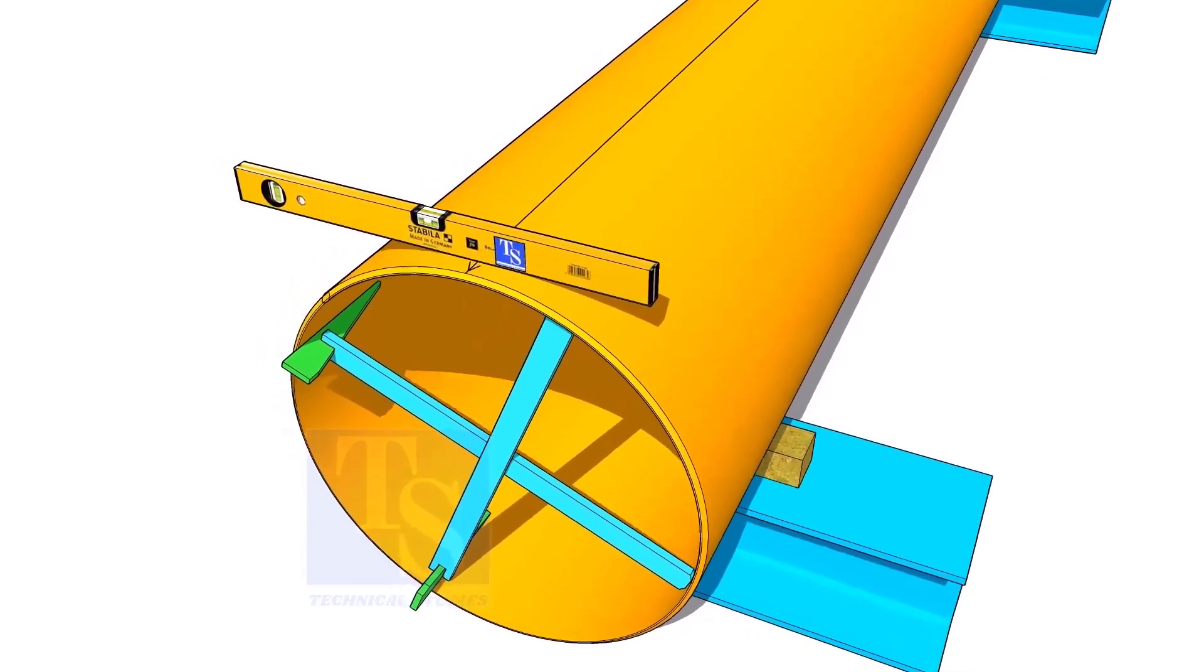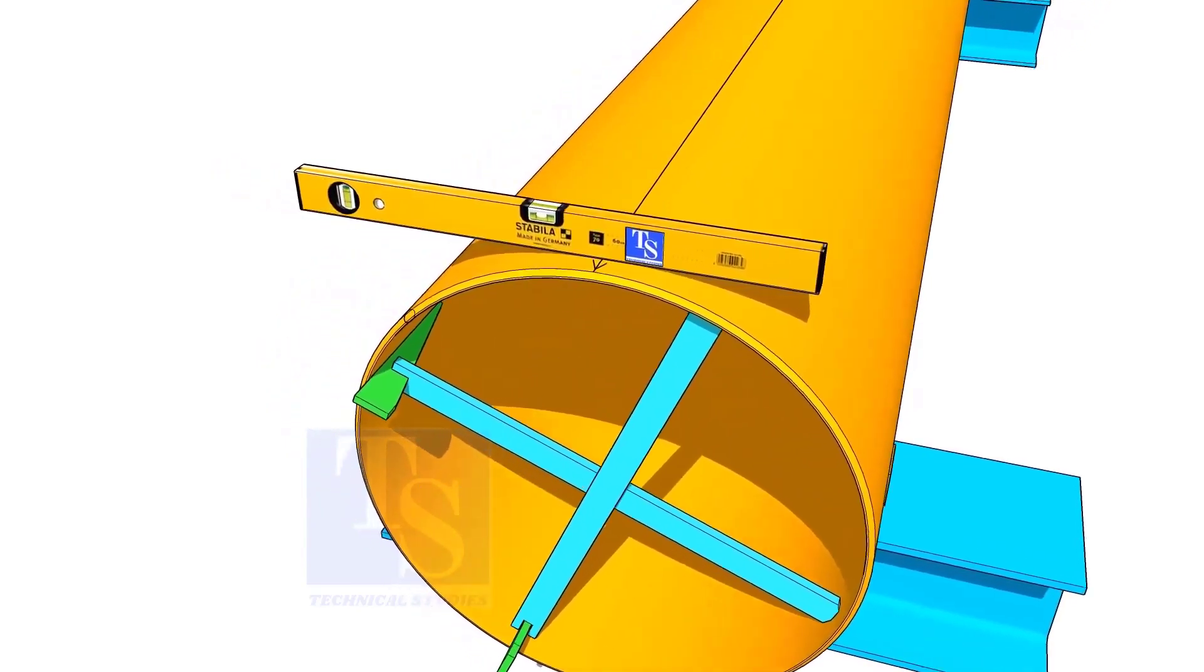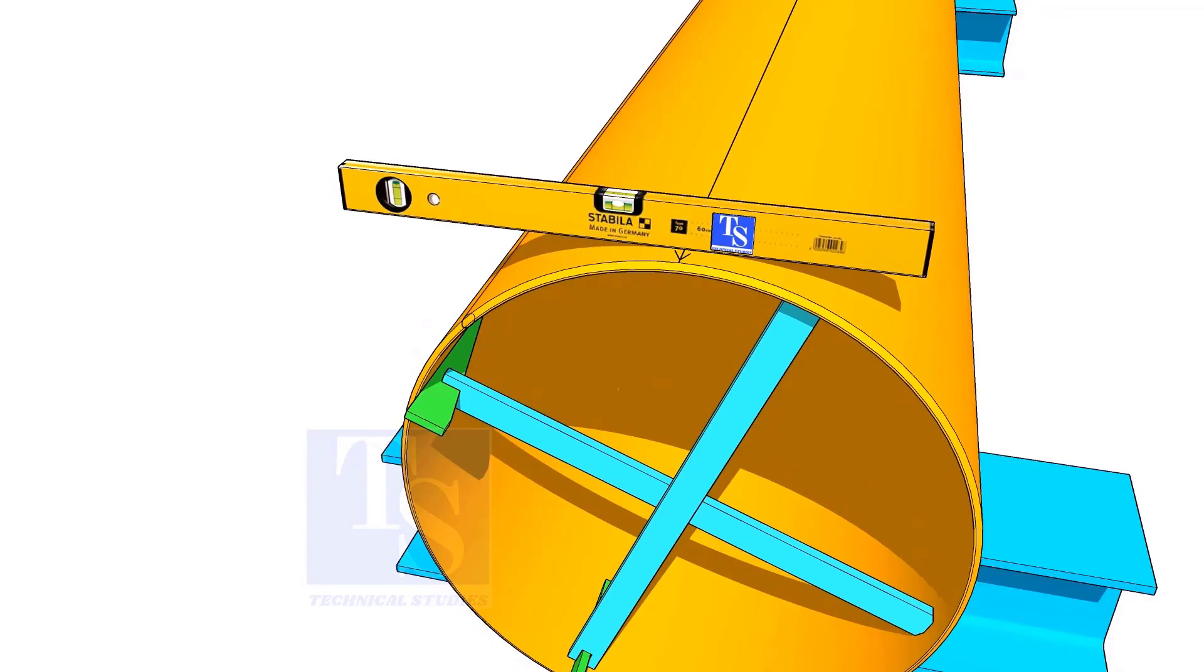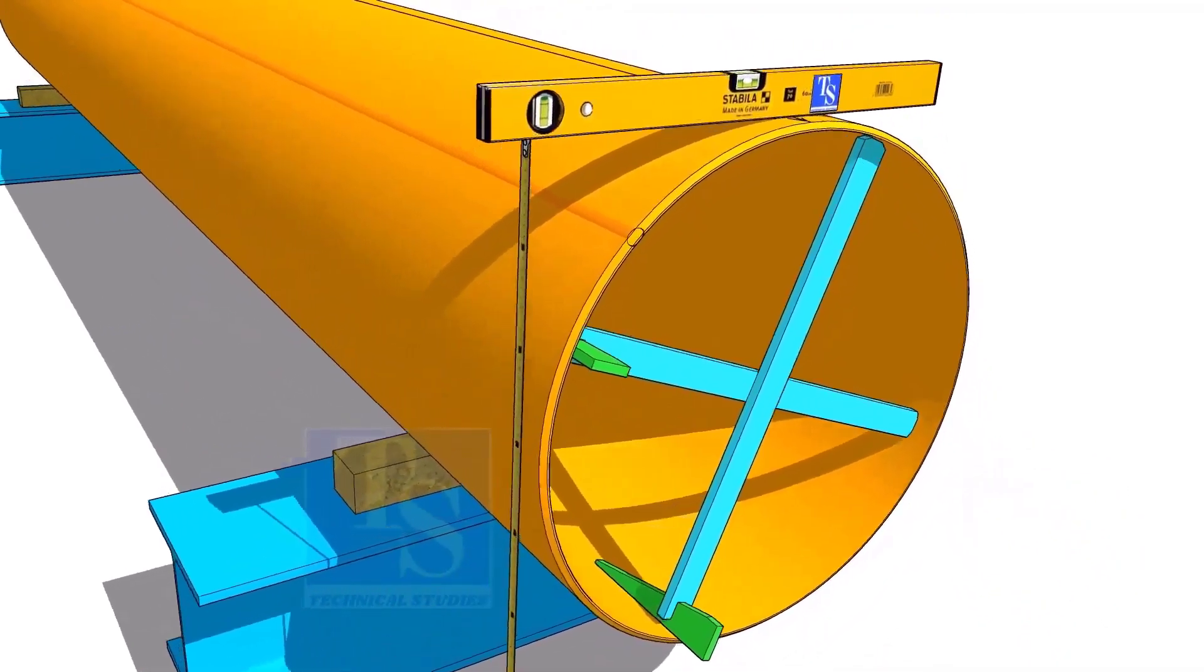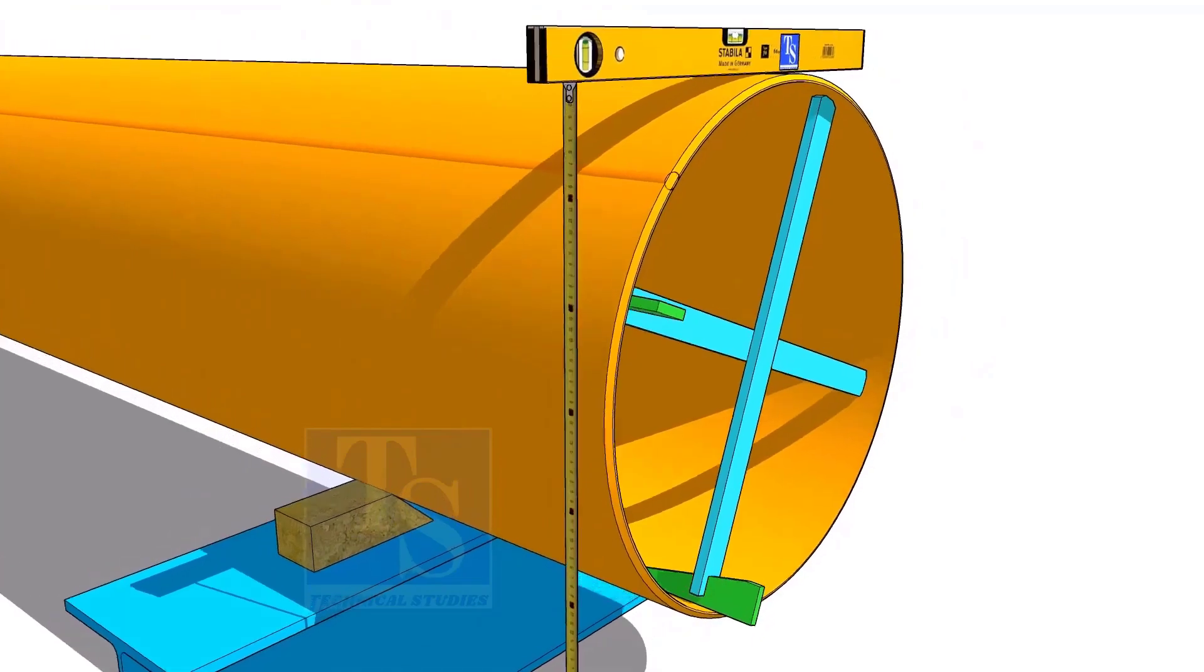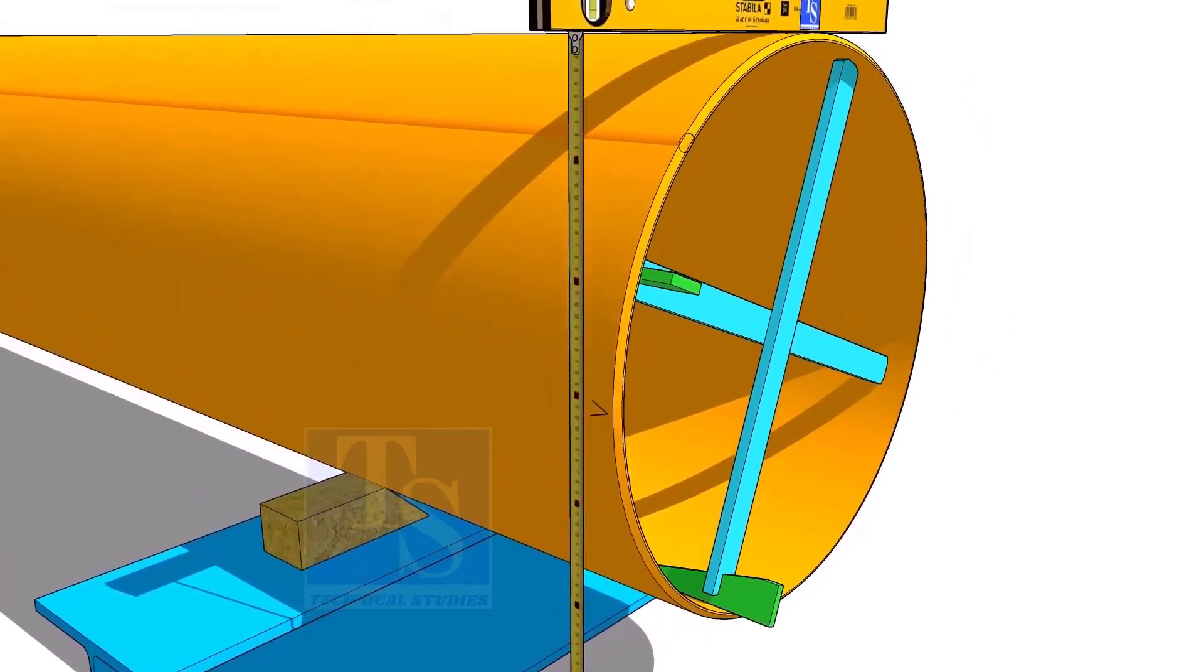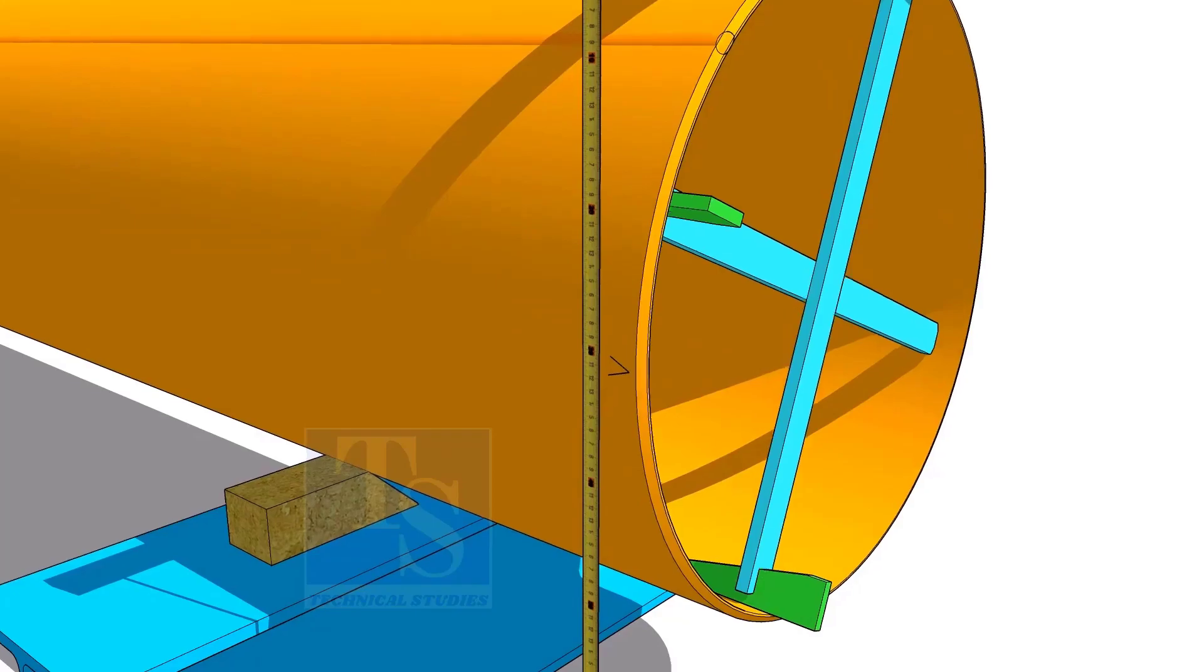Another method to mark the center line is to hold the level bottle horizontal and mark half OD on the side of the pipe. The advantage of this method is you can mark two opposite center lines at the same time.